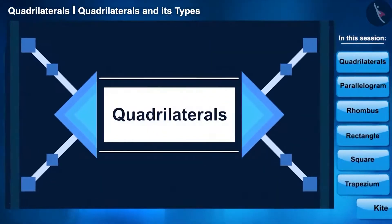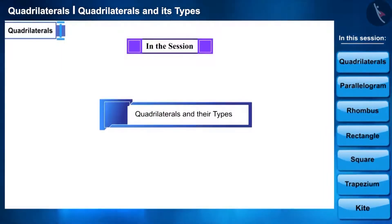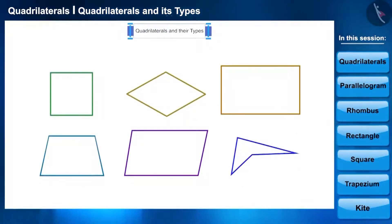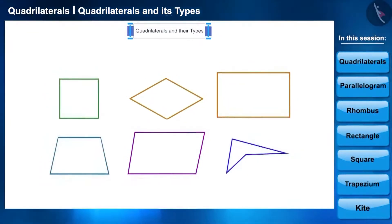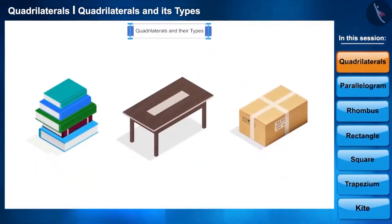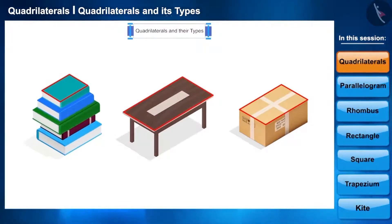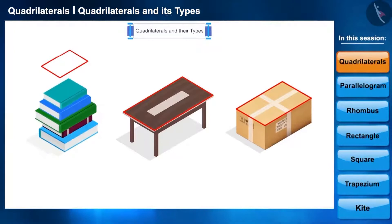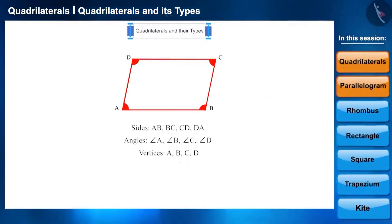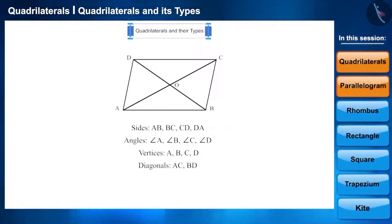Hello friends, welcome to the session on quadrilaterals. Today we will learn about quadrilaterals and their types. All these figures have four sides; such shapes are called quadrilaterals. We see many things around us with the shape of quadrilaterals — for example, the boundary of the cover of a book or the boundary of each surface of a box. A quadrilateral has four sides, four angles, four vertices, and line segments formed by joining opposite vertices are called diagonals; all quadrilaterals have two diagonals.